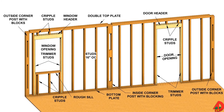Wall construction begins after the subfloor has been fastened in place. The wall system of a wood-framed building consists of exterior walls that have window and door openings, and interior walls that have door openings and archways.